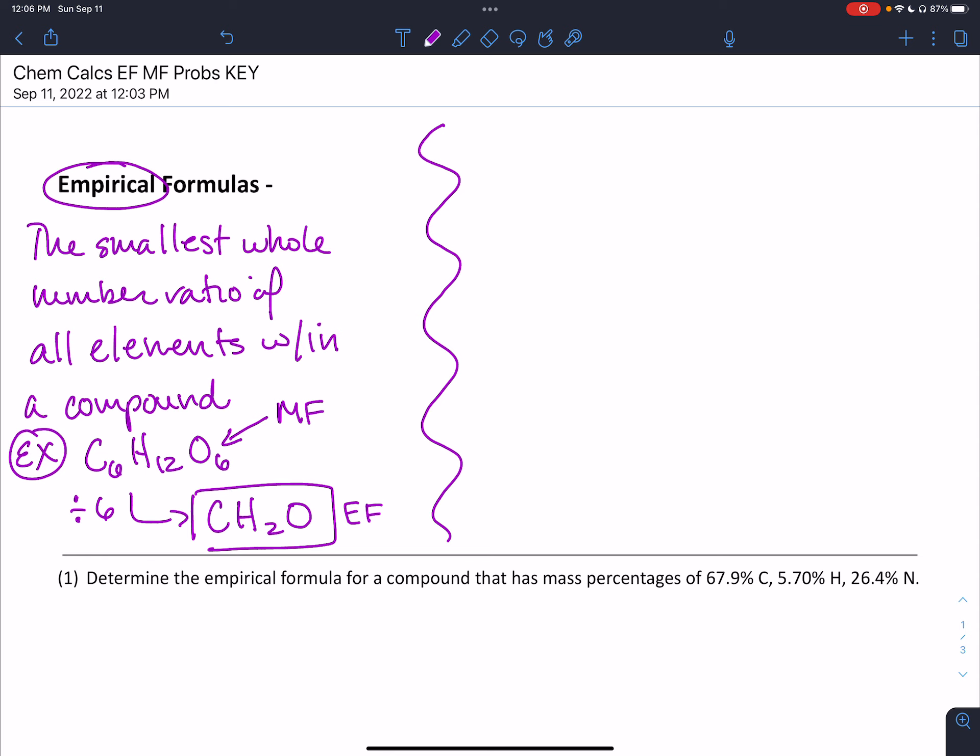How do we determine what the empirical formula is? We need to know how much of each atom type is present within that compound, and that's going to come from the mole.